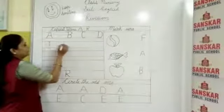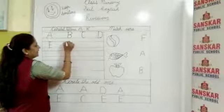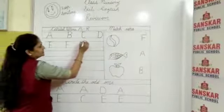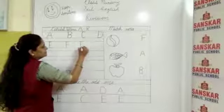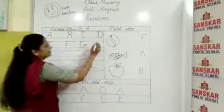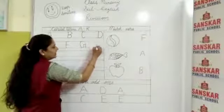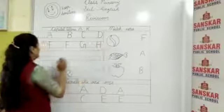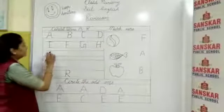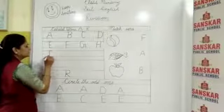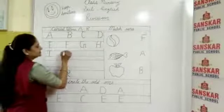After E, F. Next is capital G. After G, write down H. After H, write down capital I. Next is J.